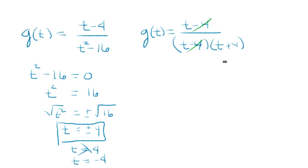We're left with g of t equals 1 over t plus 4. However, since we've changed the function, you must always state the domain of the original function. After canceling, we can see the denominator is t plus 4, so the vertical asymptote is at negative 4.